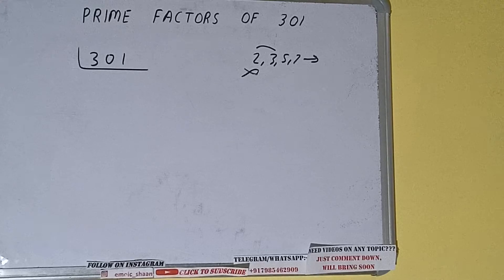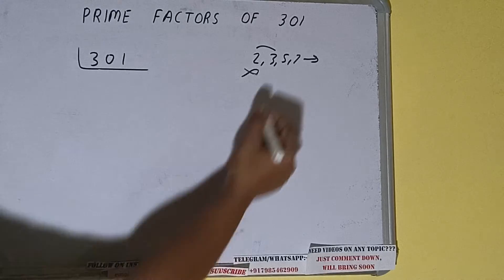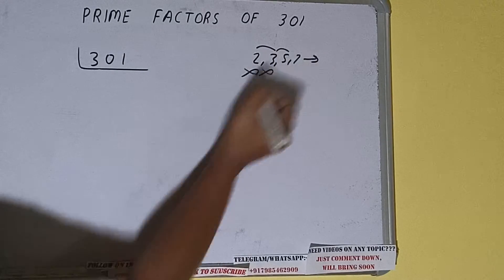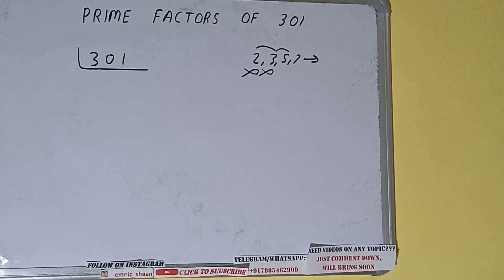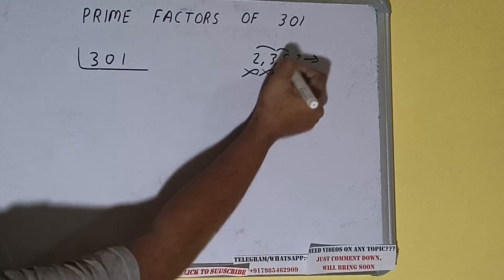So let's check with the next lowest prime number, that is 5. The last digit is neither 5 nor 0, so it is not divisible by 5 as well. So we'll be checking with the next lowest one, that is 7.